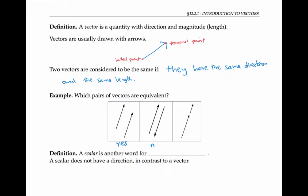The next two vectors are not equivalent to each other. They have the same length, but they point in opposite directions. If we call the first vector a — where the decorative arrow at the top represents the fact that it's a vector — then we'll call the second vector, the one that has the same length but points in the opposite direction, negative a.